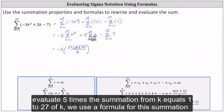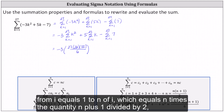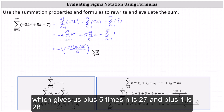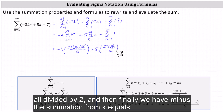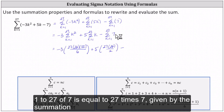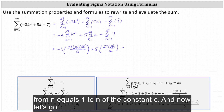To evaluate five times the summation from k equals one to 27 of k, we'll use the formula for the summation from i equals one to n of i, which equals n times the quantity n plus one divided by two. This gives us plus five times 27 times 28, all divided by two. Finally, minus the summation from k equals one to 27 of seven equals 27 times seven, using the constant summation formula.